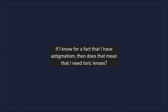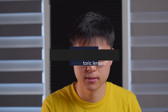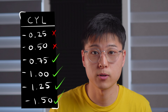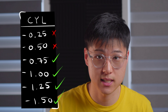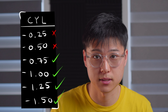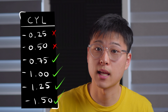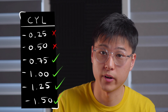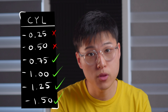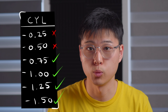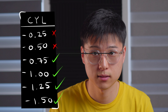If I know for a fact that I have astigmatism, does that mean I need toric lenses? Toric lens powers start at a cylindrical power of at least 0.75 diopters, which means that for people with very mild astigmatism below this threshold, you will not need toric lenses.